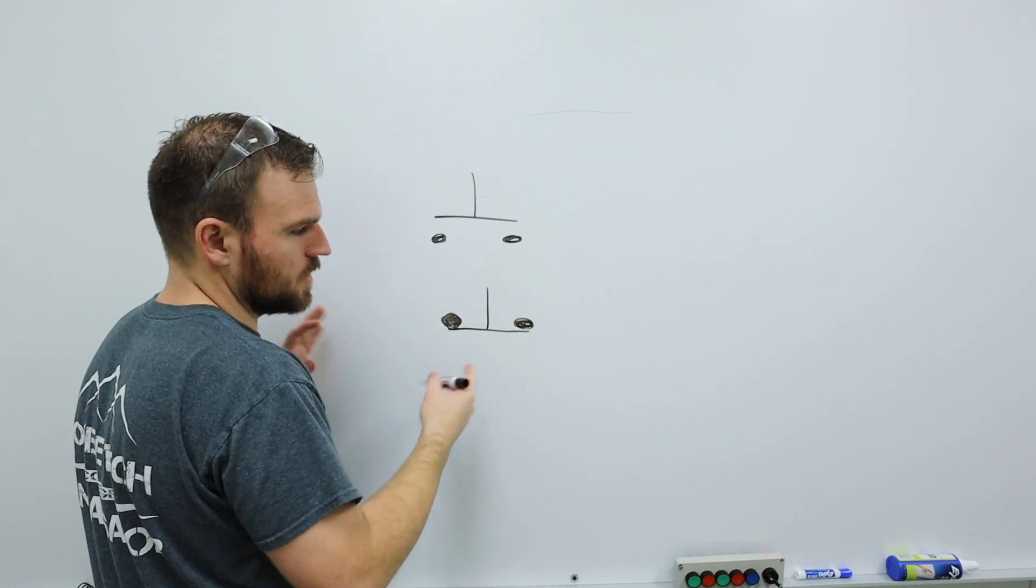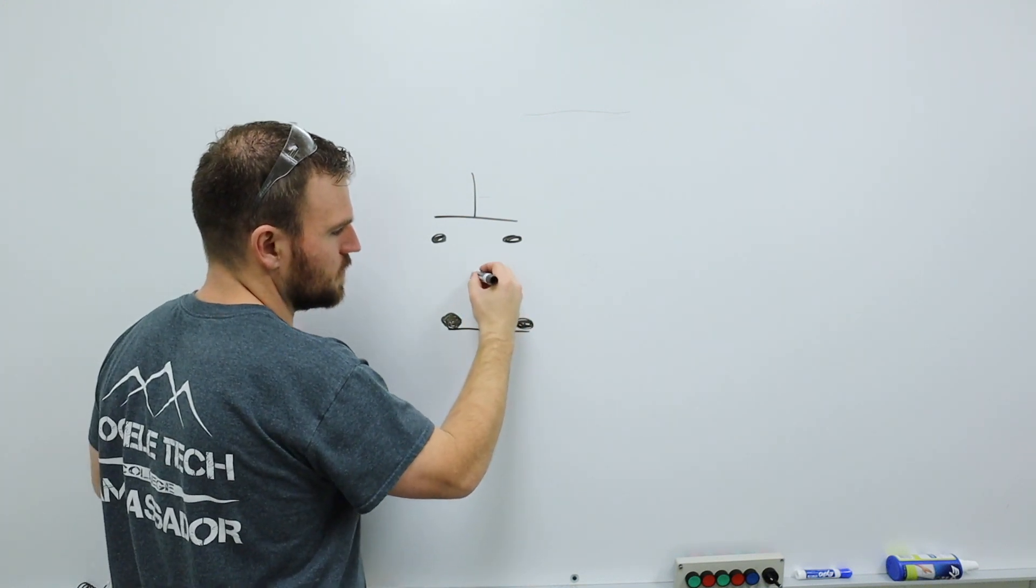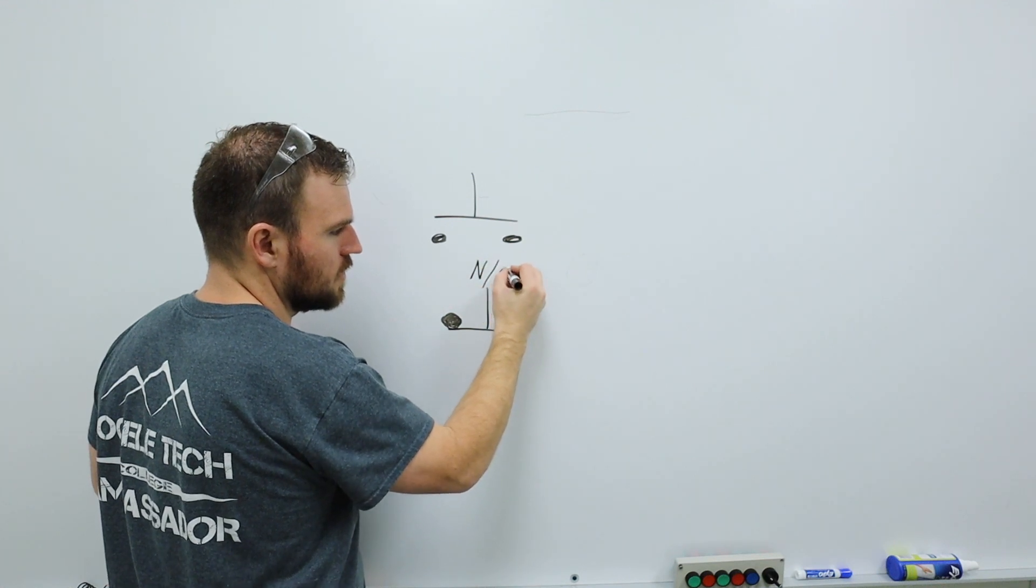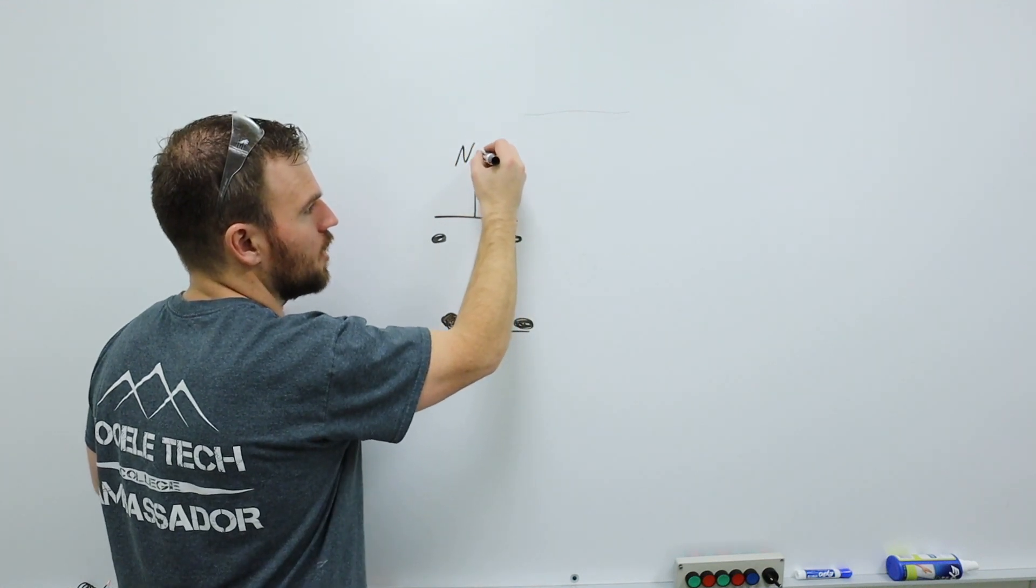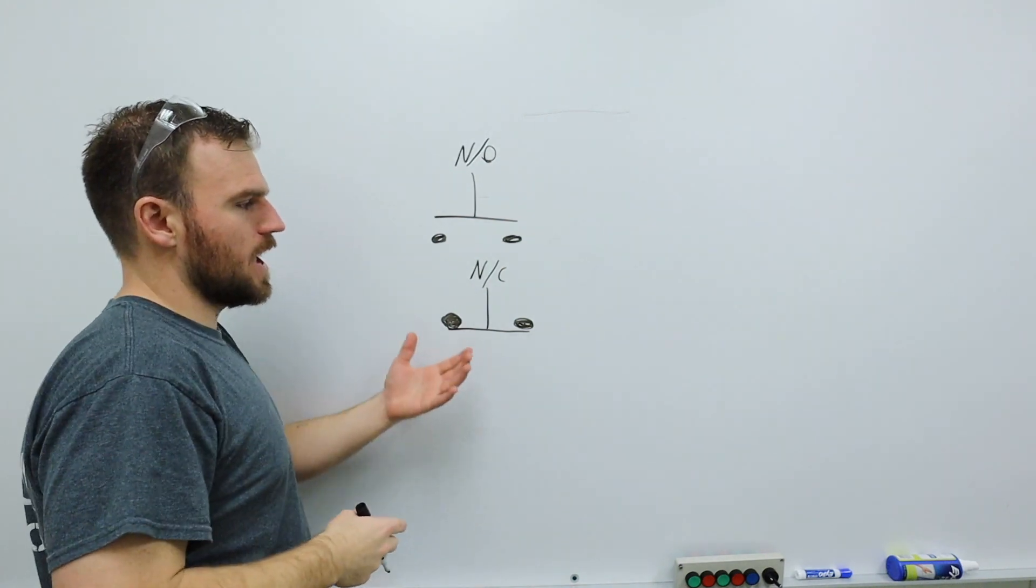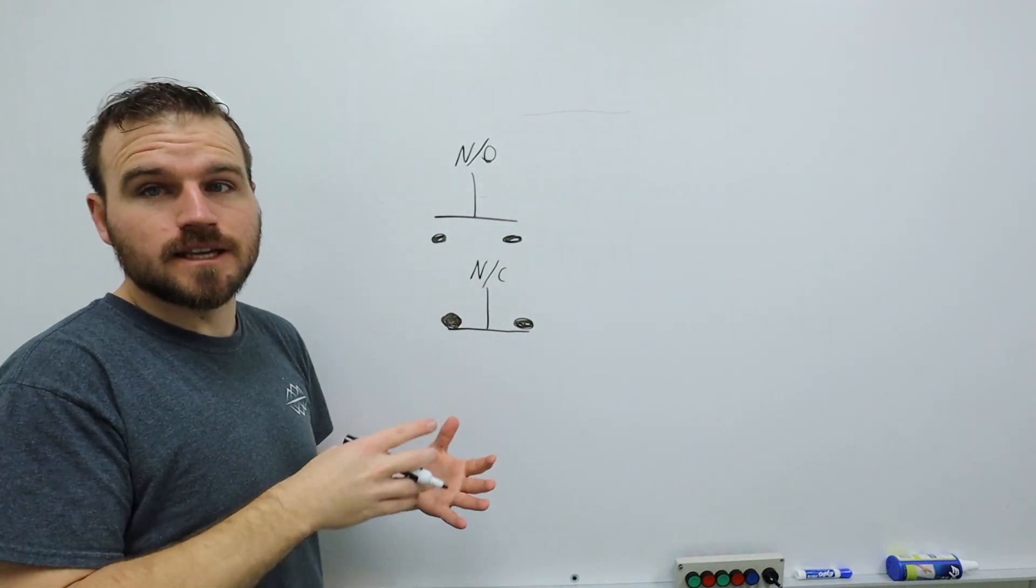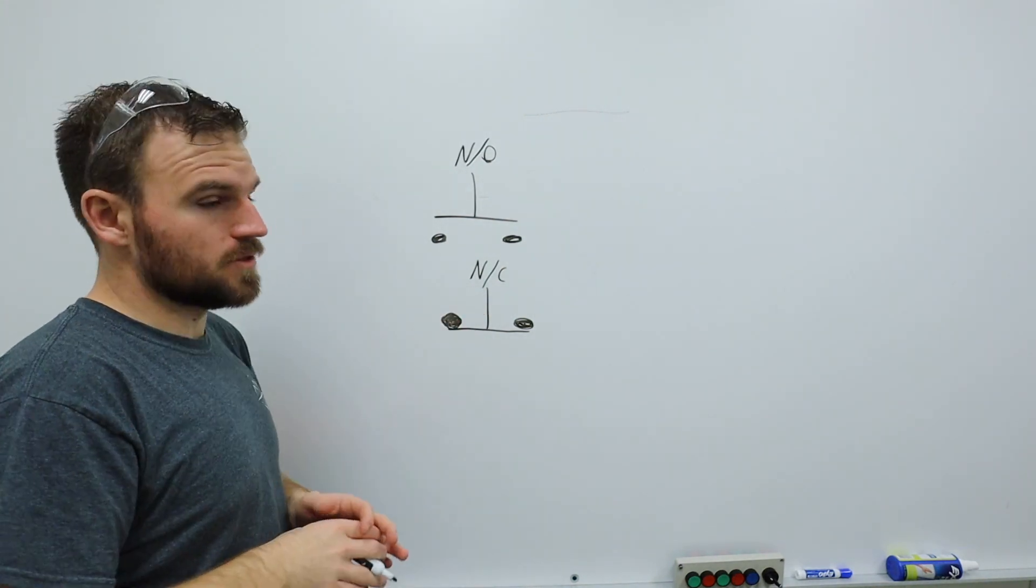So if we were going to be labeling these things, we would call this one a normally closed and this one a normally open. So NO, N/O or N/C or NC could determine both of those.